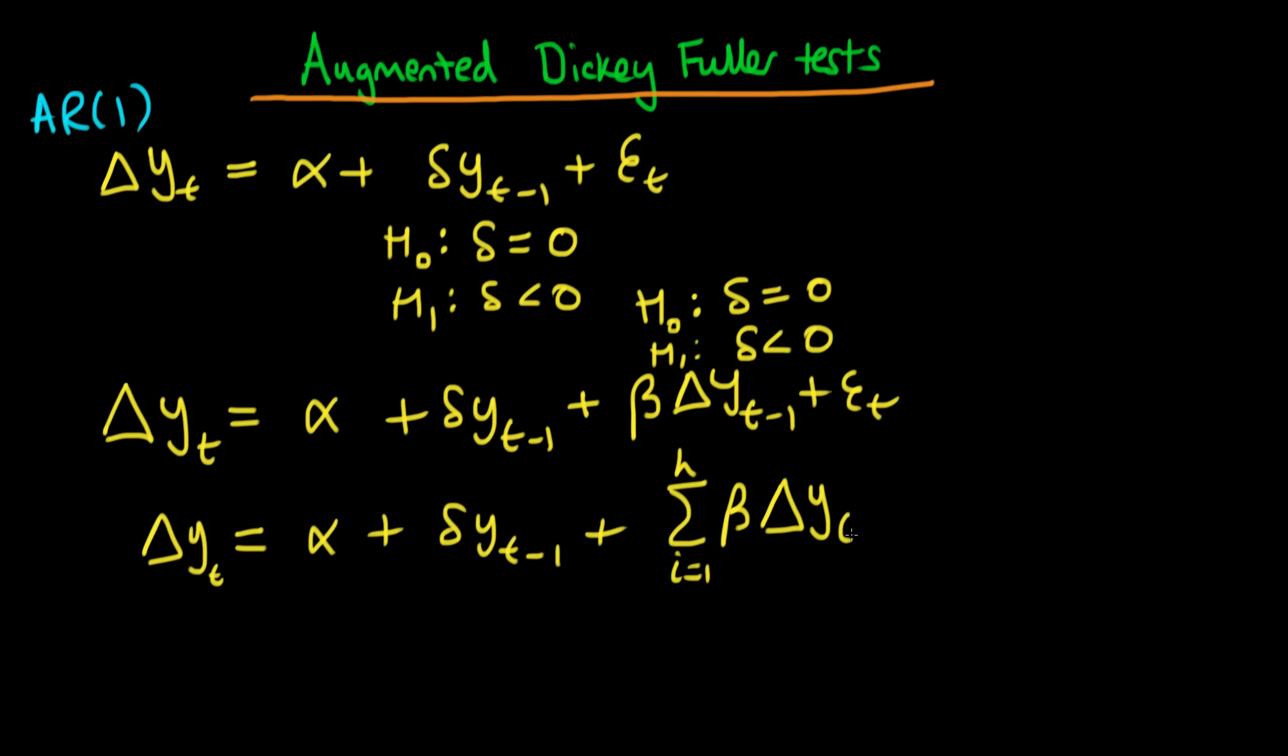Each of these different delta terms—capital delta, because I should mention I've got a small delta here and a capital delta—has a different coefficient β_i on it.